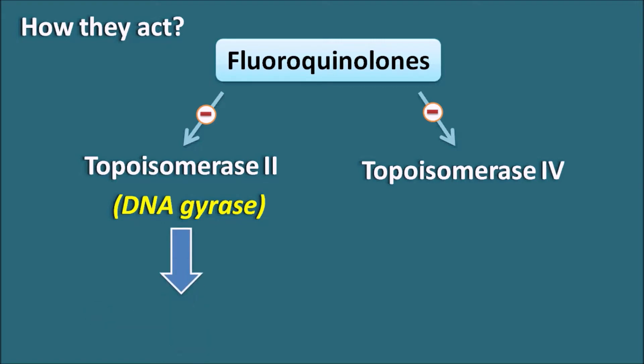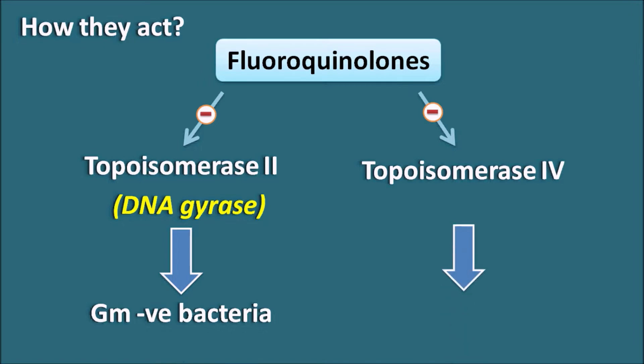Topoisomerase-2 is more important in gram-negative bacteria, whereas topoisomerase-4 is more important in gram-positive bacteria. The new generation fluoroquinolones have more activity towards topoisomerase-4, giving them extended activity against gram-positive bacteria. Still, new generation fluoroquinolones are effective against both topoisomerase-2 as well as topoisomerase-4.